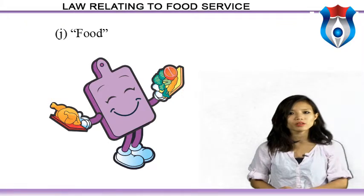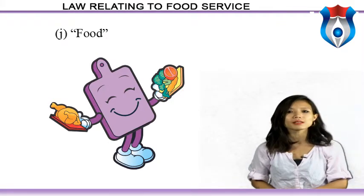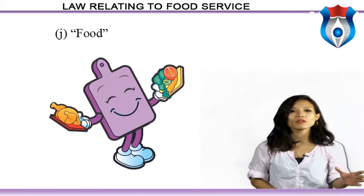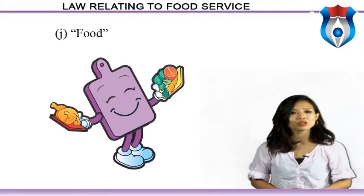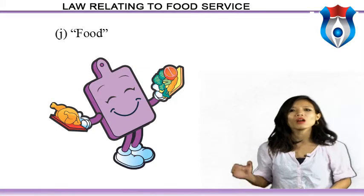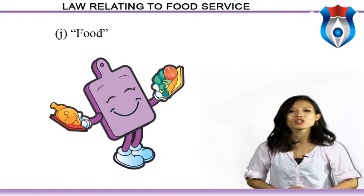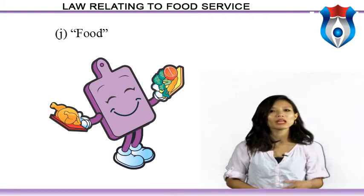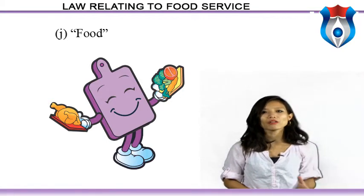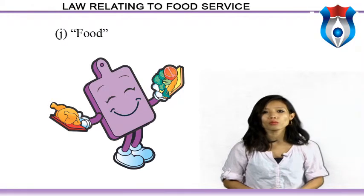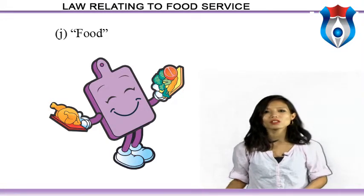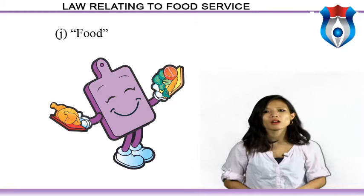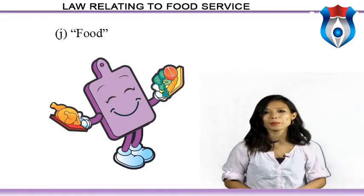Food means any substance, whether processed, partially processed or unprocessed, which is intended for human consumption, and includes primary food to the extent defined, chewing gum, and any substance including water used in the food during its manufacture, preparation or treatment, but does not include any animal feed, live animals unless prepared for placing on the market for human consumption, plants prior to harvesting, drugs and medical products, cosmetics, or narcotic or psychotropic substances.